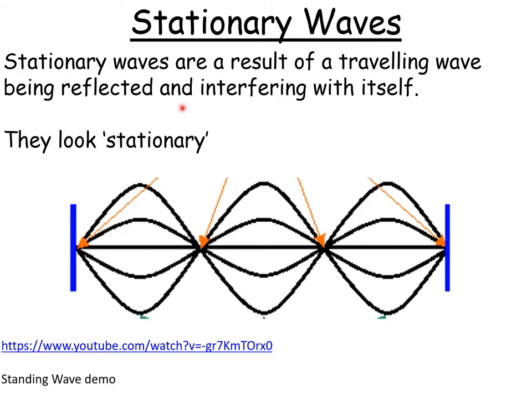Now a stationary wave is a result of a travelling wave being reflected and interfering with itself. And if I was able to show you this, you would see that a stationary wave would look like this.